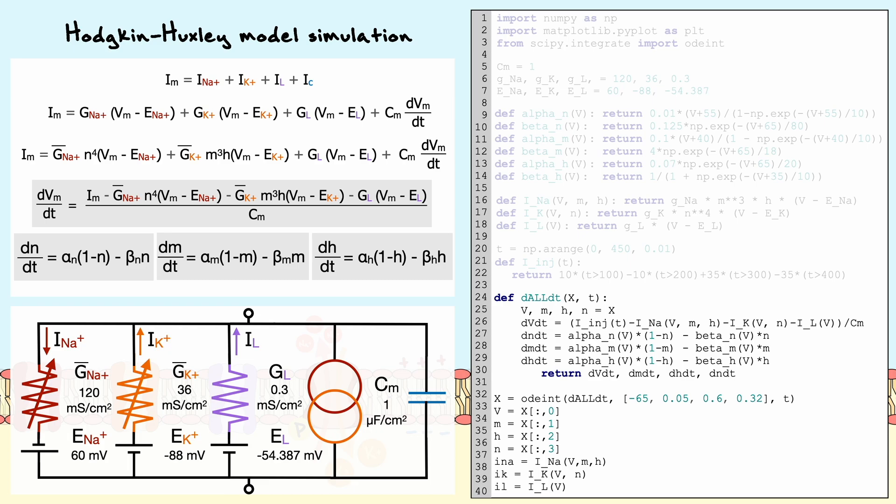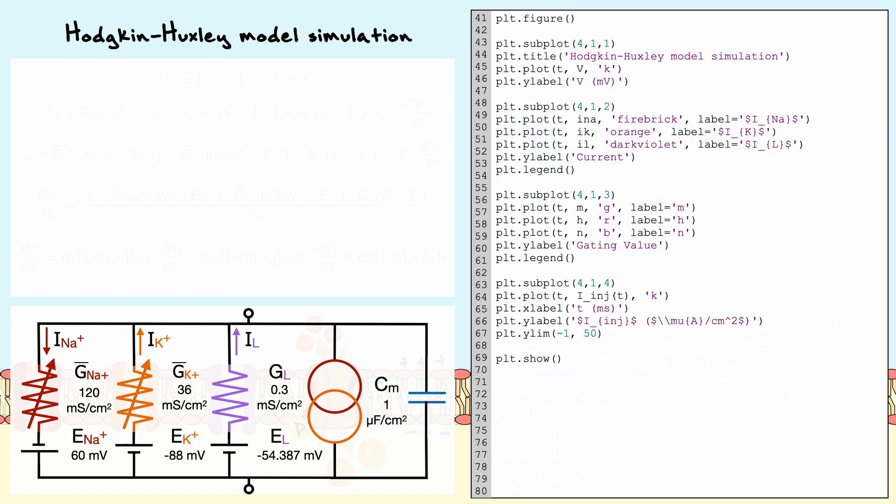Then we can collect the values computed by the module into the variables lowercase i n a, lowercase i k and lowercase i l. Finally, we can make plots of the membrane potential, sodium, potassium and leak currents, the gating variables and the ejected current as a function of time, using the commands of matplotlib as shown here.